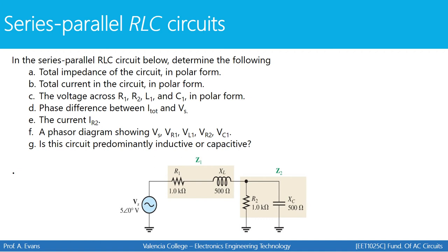We're going to do three examples. Here's example number one — a series parallel RLC circuit shown on the screen. We're going to find the total impedance, the total current, the voltage across every component, the phase difference between the total current and the source, the current through R2, a phasor diagram for all of the voltages, and whether the circuit is predominantly inductive or capacitive — meaning which element has more effect on the circuit behavior, the inductor or the capacitor.